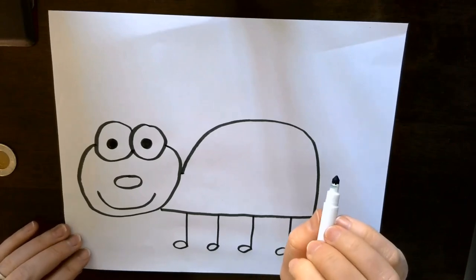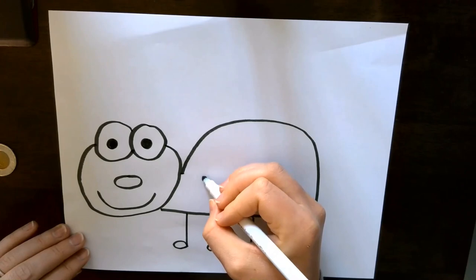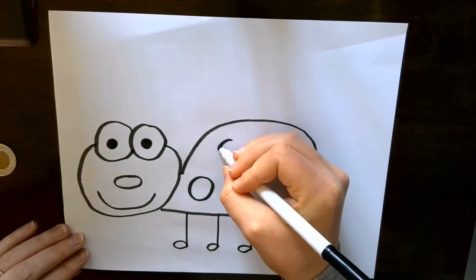Now on the ladybug's shell we're going to add the polka dots. So add as many round circles as you would like.